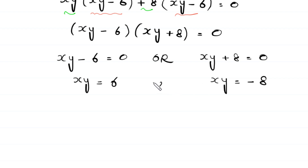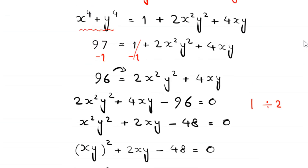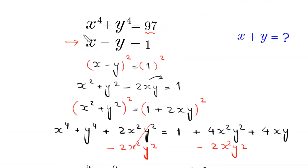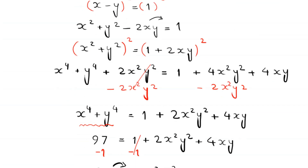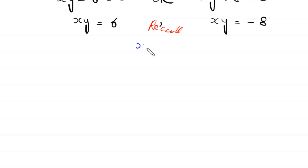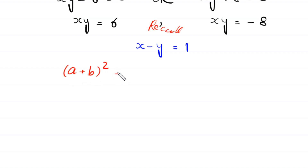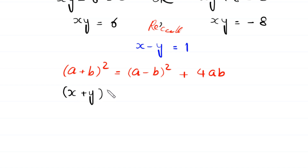Now we recall the equation x minus y equals 1, and we have to find the value of x plus y. We use the algebraic identity: a plus b whole squared equals a minus b whole squared plus 4ab. Applying this, x plus y whole squared equals x minus y whole squared plus 4xy.